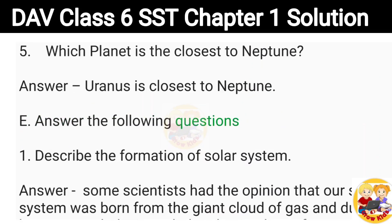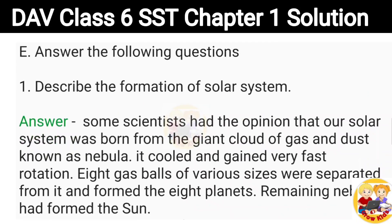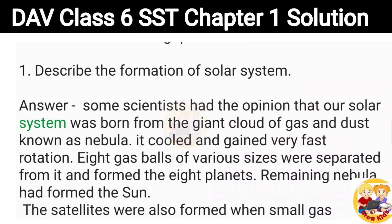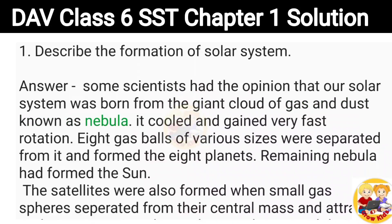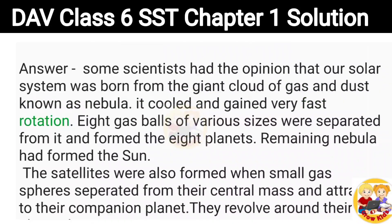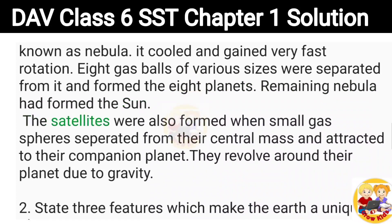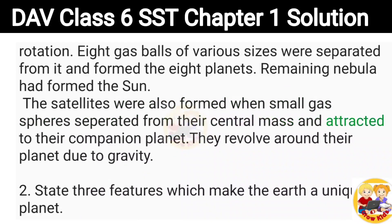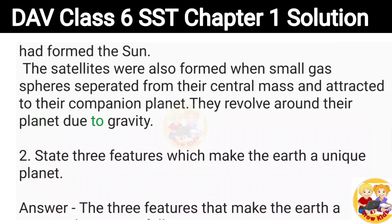Answer the following questions. 1. Describe the formation of solar system. Answer: Some scientists had the opinion that our solar system was born from the giant cloud of gas and dust known as nebula. It cooled and gained very fast rotation. Eight gas balls of various sizes were separated from it and formed the eight planets. Remaining nebula had formed the Sun. The satellites were also formed when small gas spheres separated from their central mass and attracted to their companion planet. They revolve around their planet due to gravity.